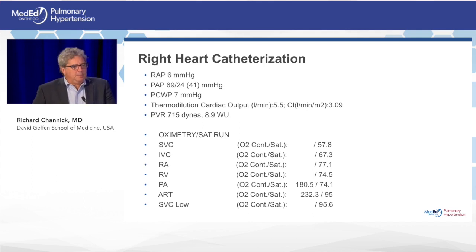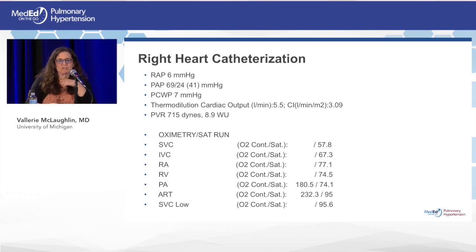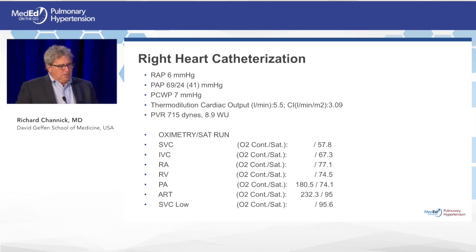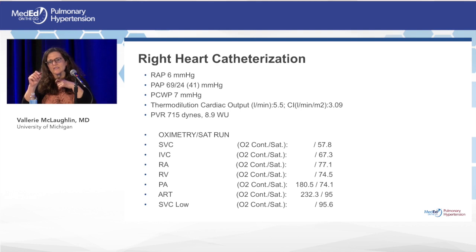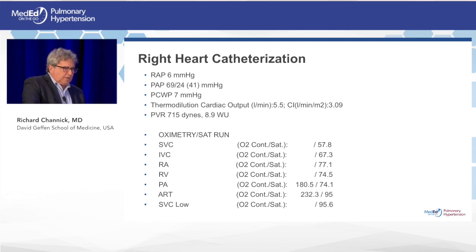Right heart hemodynamics were obtained. The right atrial pressure is six — normal. Mean PA pressure is elevated at 41. Wedge is seven. The cardiac output appears to be in the normal range, possibly a Fick measurement. Looking at the saturation run, there's a step up from the SVC to the right atrium, suggesting some left-to-right shunting. A bubble study was also performed — video unavailable — but significant early bubbles were seen in the left side of the heart within the first two beats, indicating pacification of the left heart.